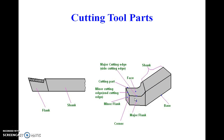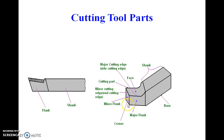This figure shows the cutting tool parts clearly. The top portion of this tool is known as the shank, which is provided to hold this tool within the tool holder. The base of this shank portion is known as the base. The whole reduced portion from the shank portion at the front end of the cutting tool is known as the cutting part or the neck portion.